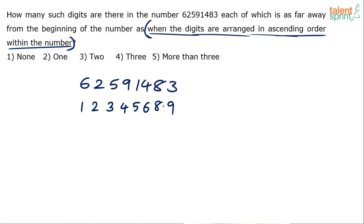Now we have to find digits which are as far away from the beginning in the original number and also in the ascending order number. You should always write the two numbers one above the other. Then all you have to do is pick digits which are in the same position in both numbers.